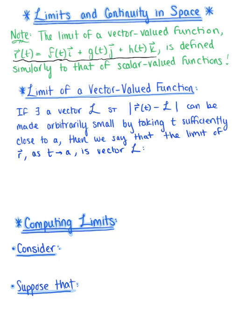So let's explore the limit of a vector-valued function. If there exists a vector L such that the absolute value of the vector-valued function r(t) minus vector L can be made arbitrarily small by taking t sufficiently close to a, then we say that the limit of vector r as t approaches a is vector L.